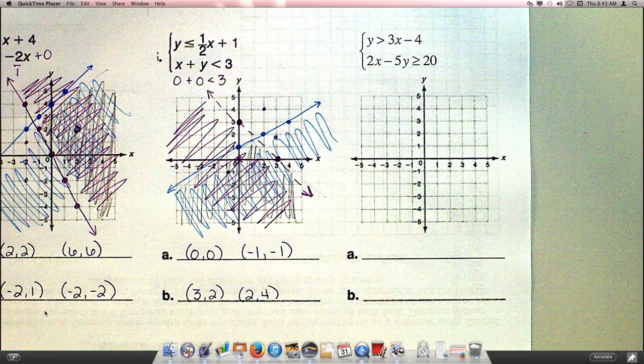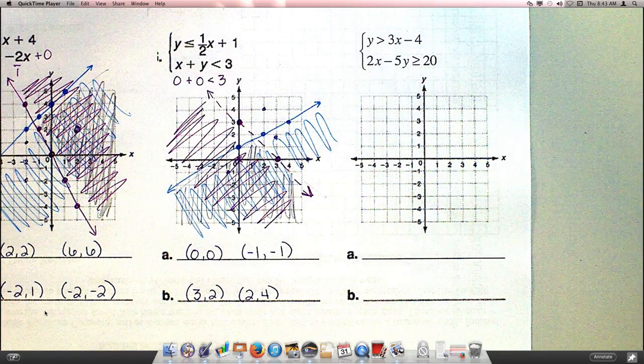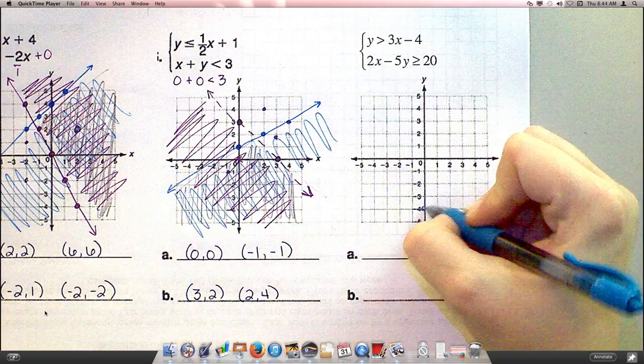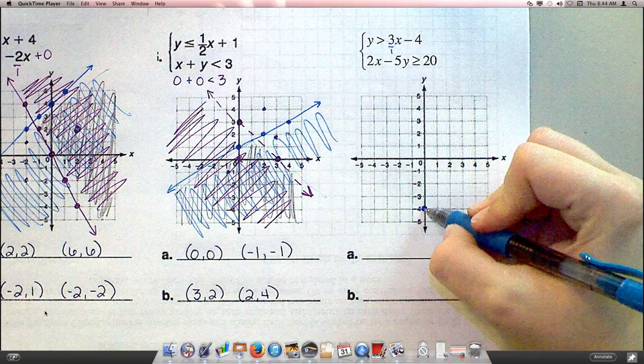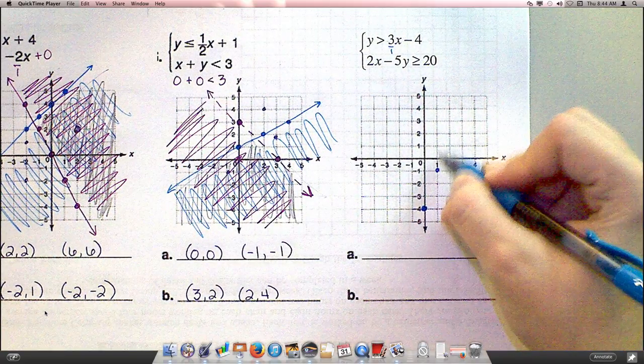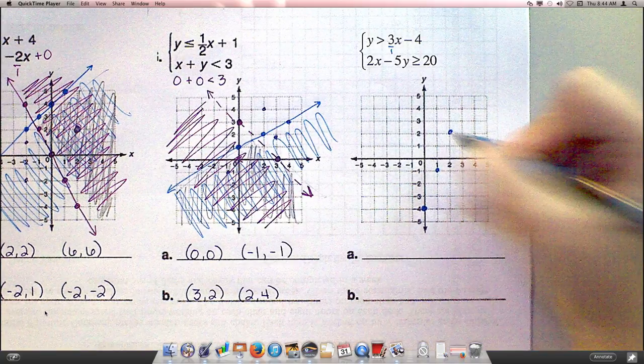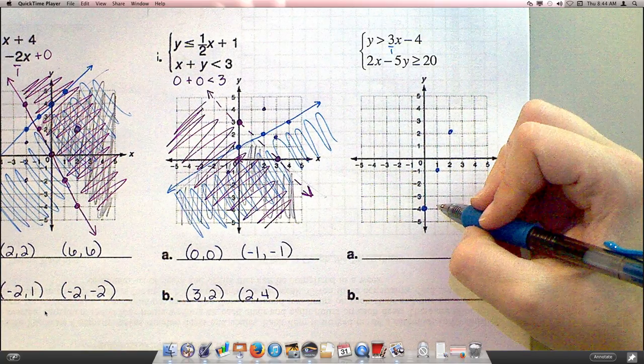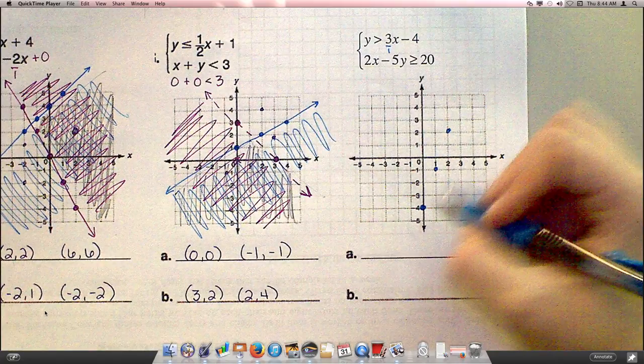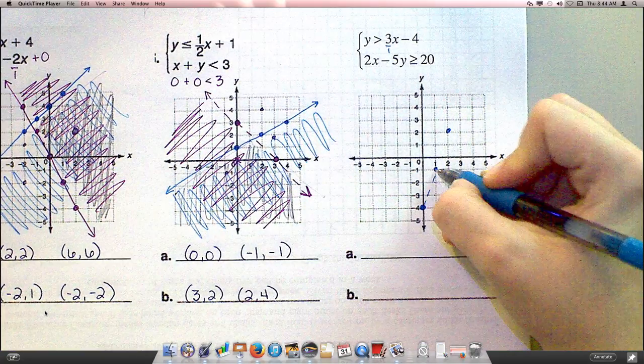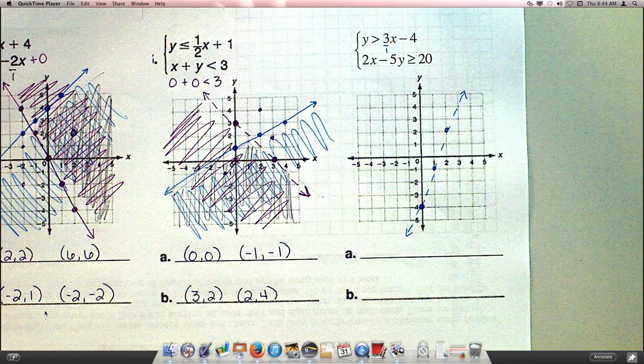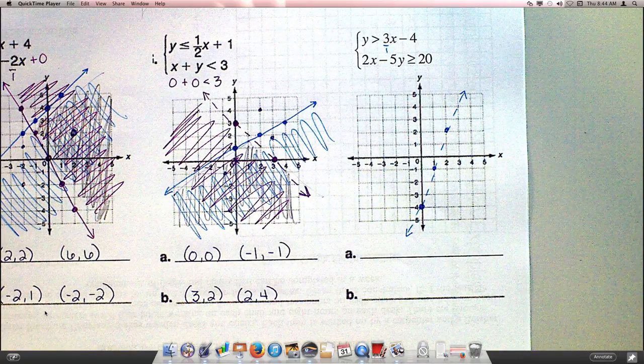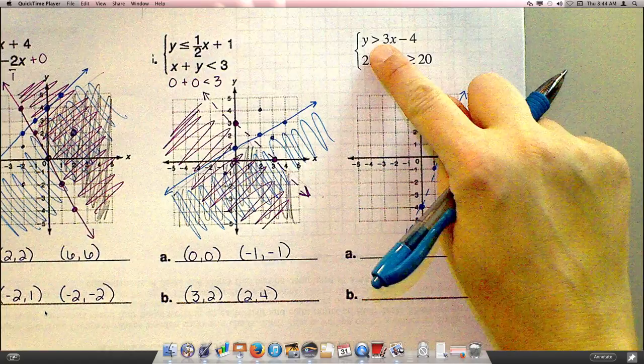There must be a reason I gave you this third one to do. So let's try this one. Where am I starting with that first one? Negative 4. Negative 4 on the y-axis. And I'm going up 3 over 1. Yep. 3 over 1 is your slope. So I'm going up 3 and over 1. What kind of line? Dotted line. Yep. No equal bar in that one. And shading above or below. Above because that's greater than. So I'm shading up here.